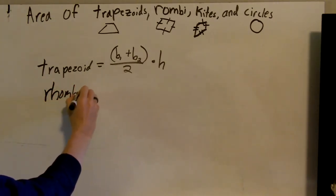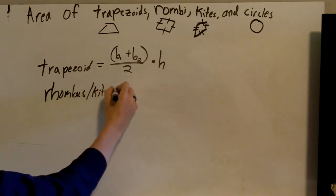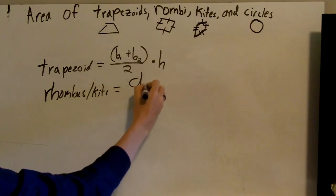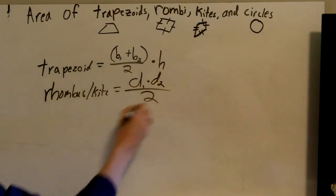Then we have the rhombus and kite actually have the same formula. And that is diagonal one times diagonal two, all divided by two.